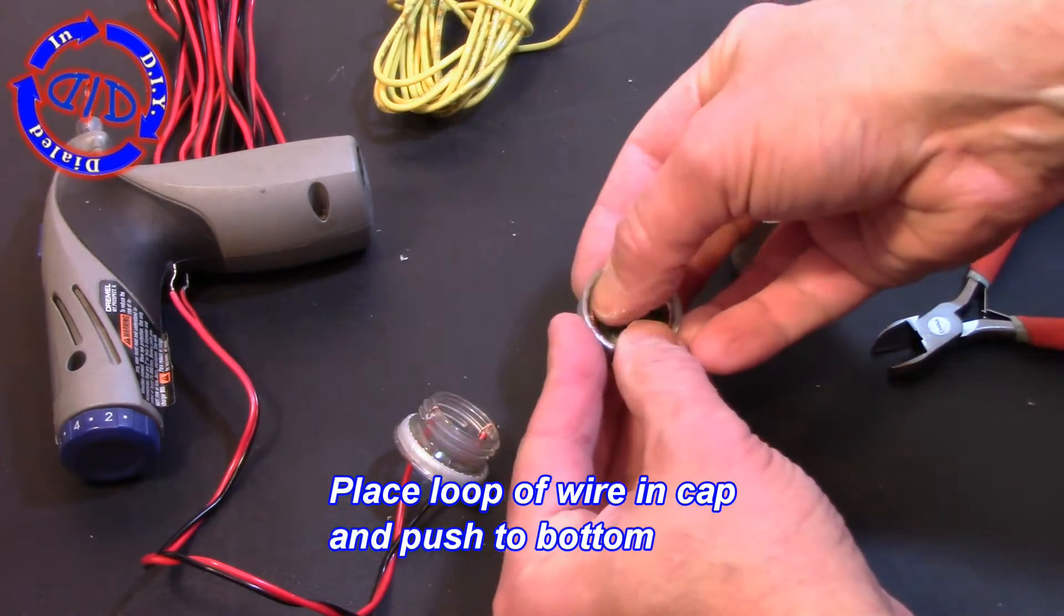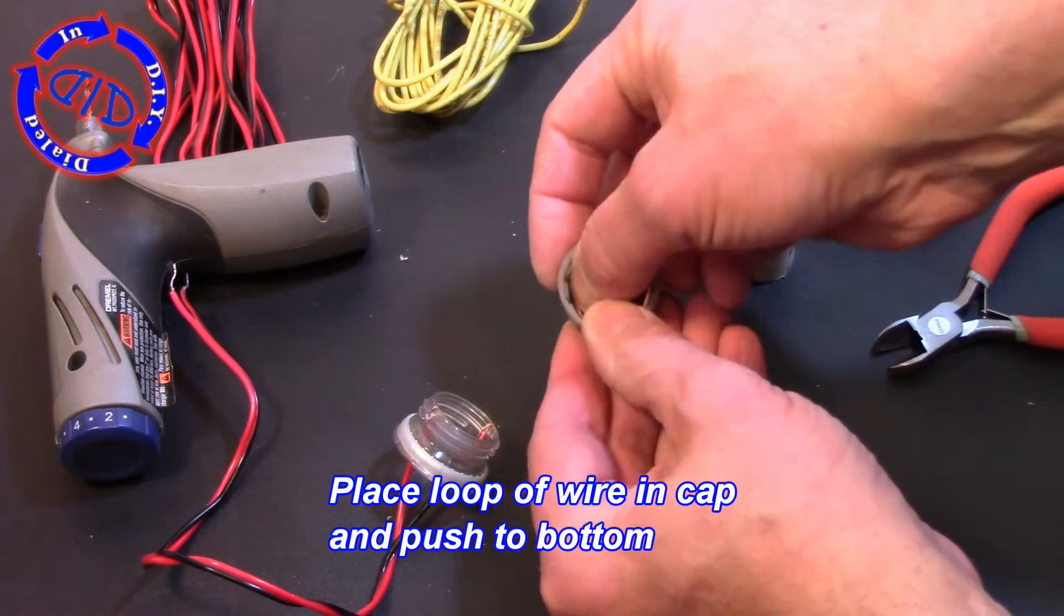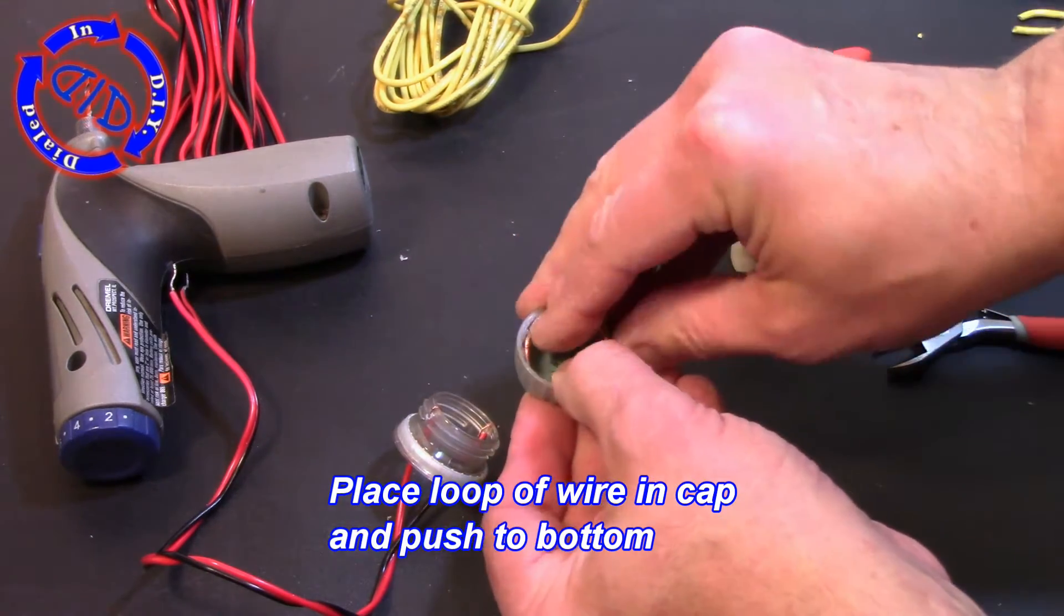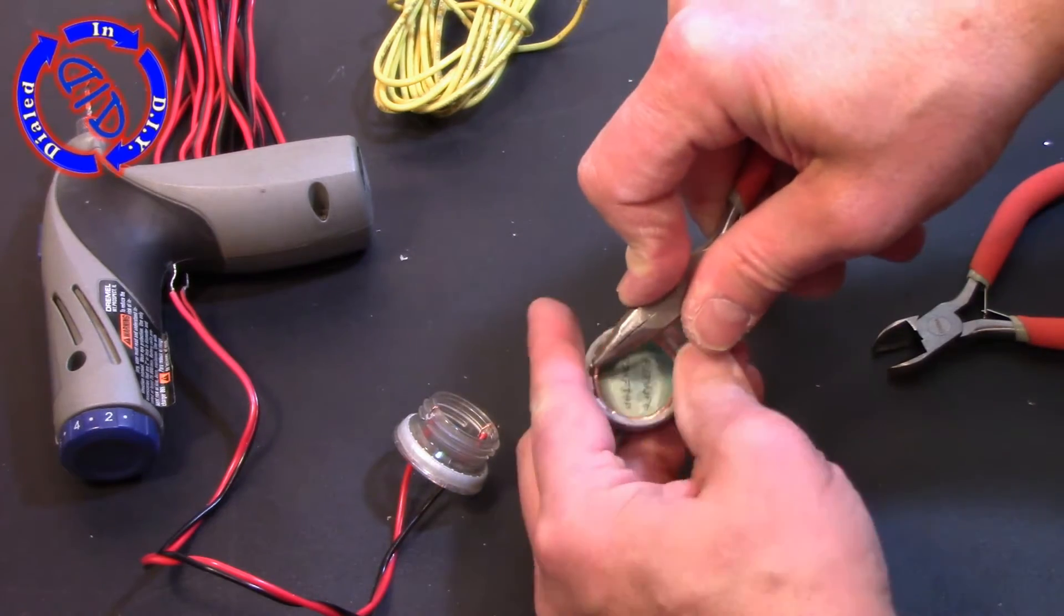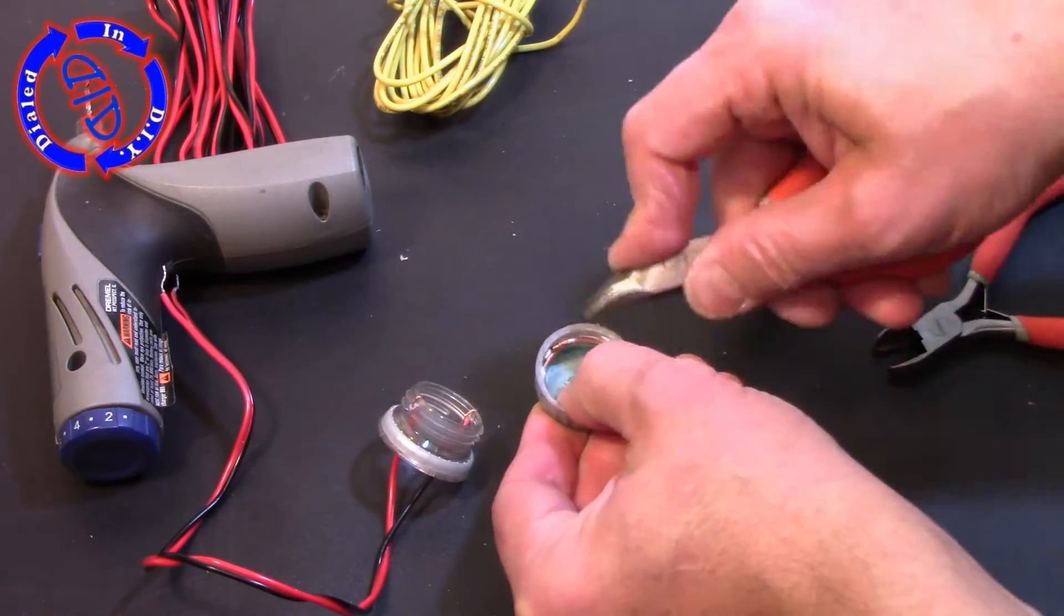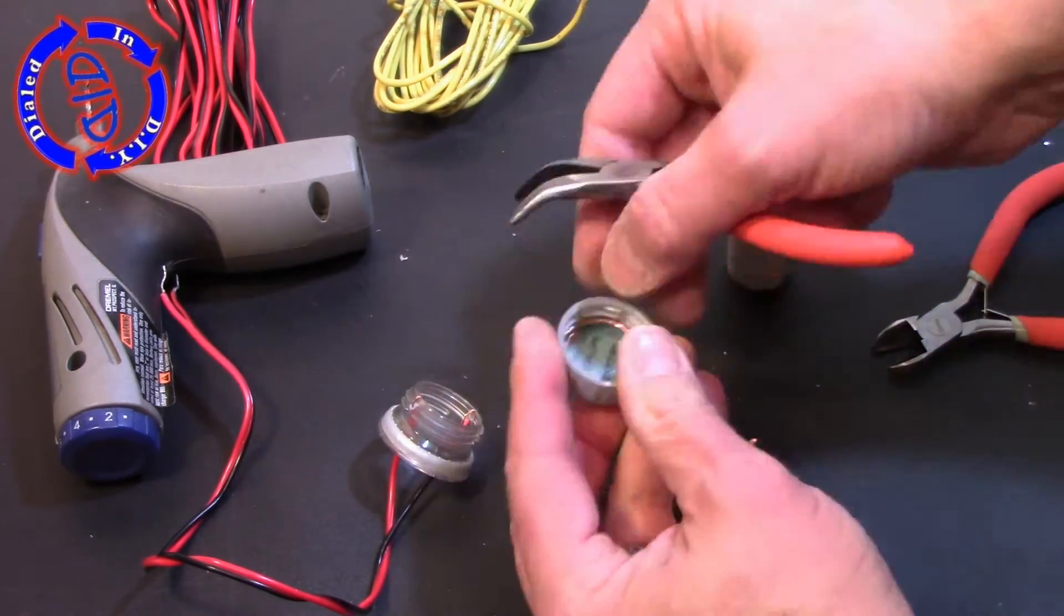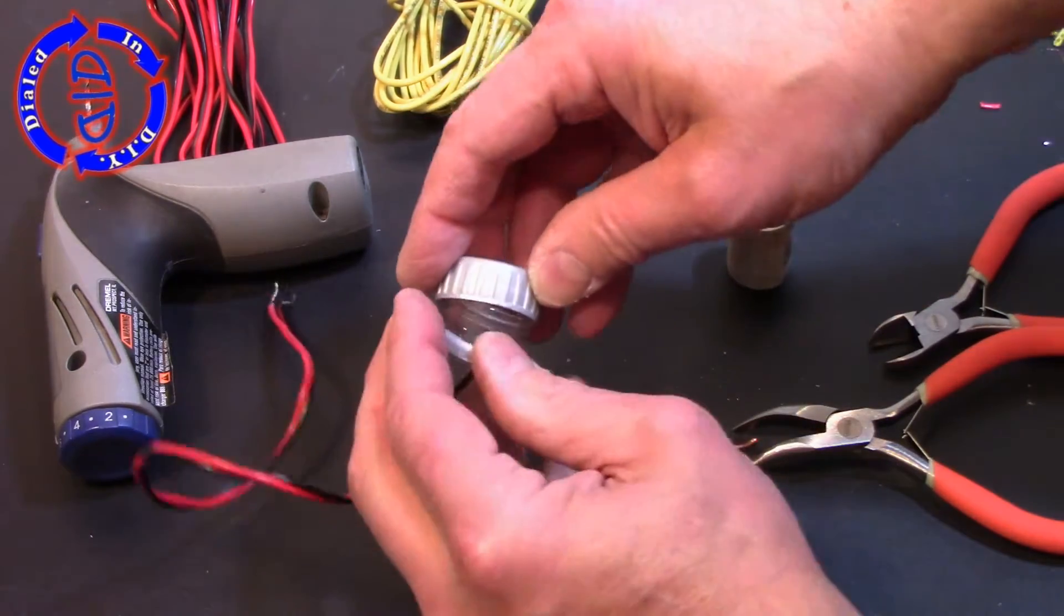Once you've got this shaped back into a circle push it down inside your cap until it seats all the way against the bottom of that cap. You'll notice that once I had it in here there's still a little bit of overlap of that copper wire and that's okay, it'll work just fine that way.